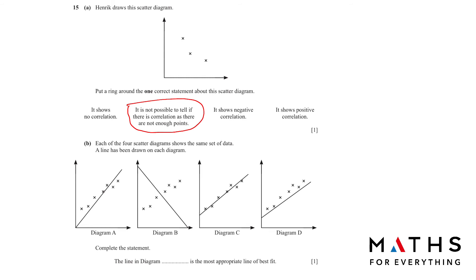Part b: Each of the four scatter diagrams shows the same set of data. They are all the same set of data. A line has been drawn on each diagram. Which is the line of best fit? Line of best fit divides the points into equal side on both sides of the line. So I will have equal points on this side of the line and equal points on this side of the line. We can clearly see that it is diagram C.